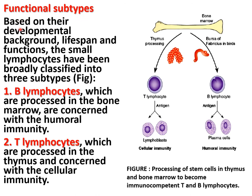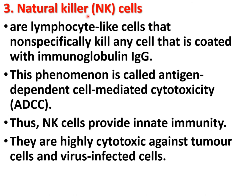Based on developmental background, lifespan, and function, small lymphocytes are broadly classified into three subtypes: B lymphocytes, processed in the bone marrow and concerned with humoral immunity; T lymphocytes, processed in the thymus and concerned with cellular immunity; and natural killer cells, which are lymphocyte-like cells that non-specifically kill any cell coated with immunoglobulin G — a phenomenon known as antigen-dependent cell-mediated cytotoxicity. Natural killer cells provide innate immunity and are highly cytotoxic against tumor cells and virus-infected cells.